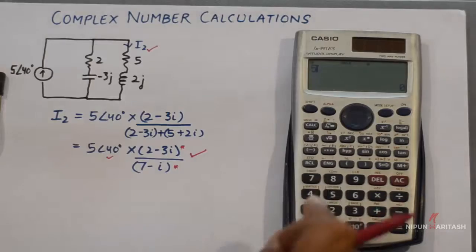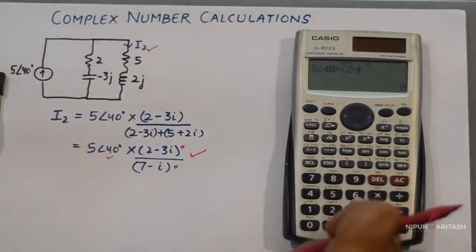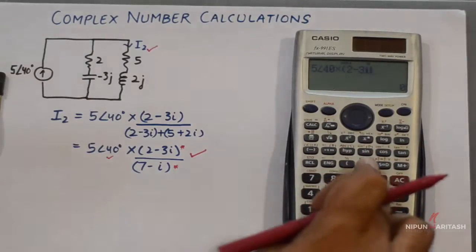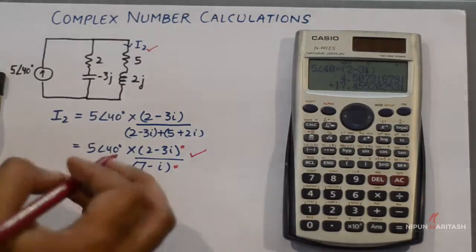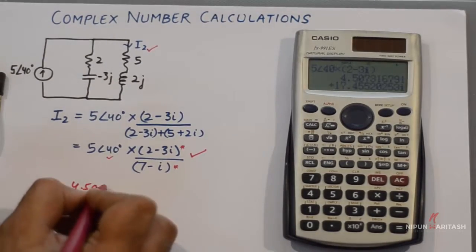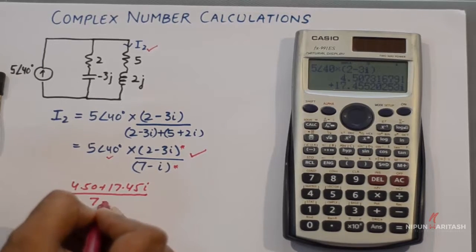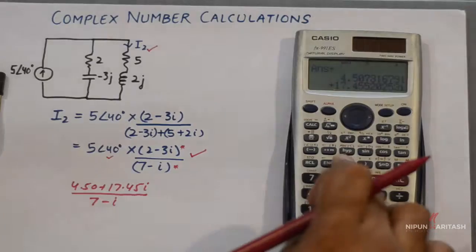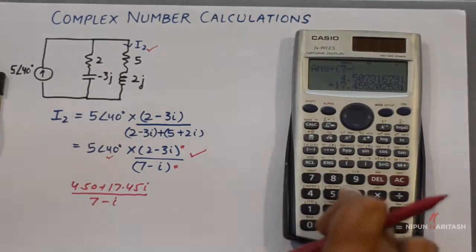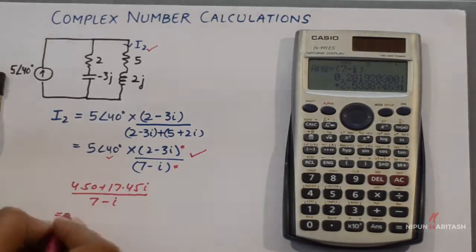So you can type 5 angle 40, then multiply it with 2-3i. You'll get an answer that you can divide by 7-i. So I'll divide the answer by 7-i.